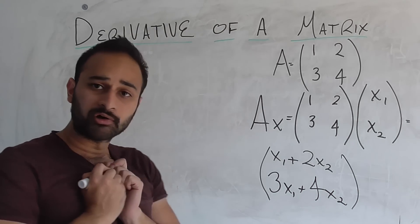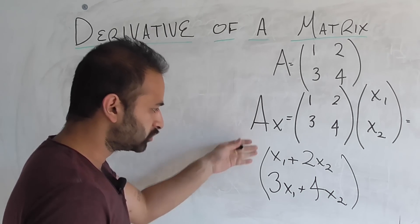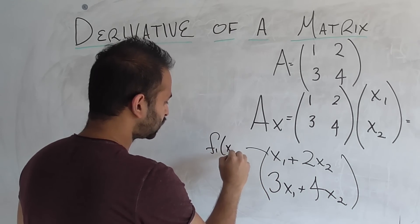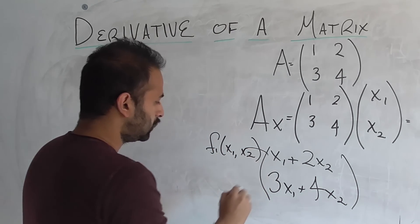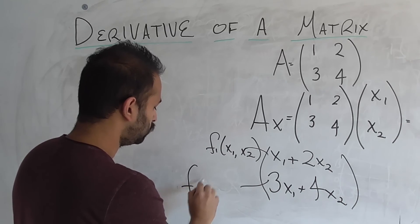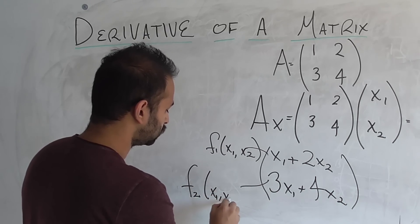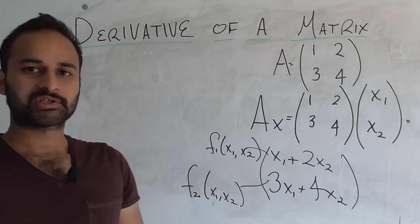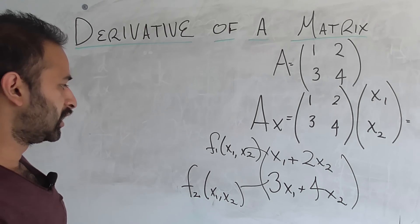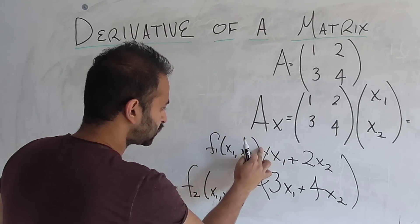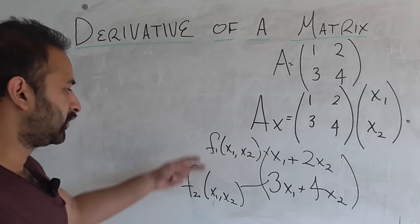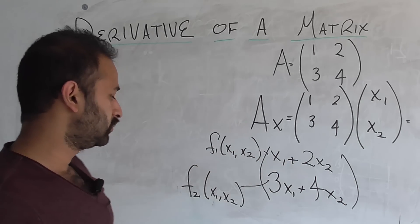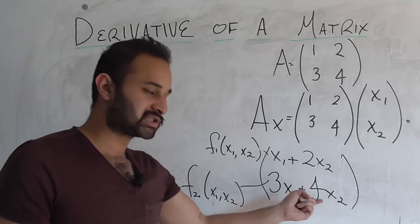Now, for terminology, let's go ahead and give names to these two functions we've created. Let's call this one f1 of x1 and x2, and let's call this one f2 of x1 and x2. So we see that that makes sense. Both are functions of two variables, x1 and x2, and they're two separate functions. So f1 is x1 plus 2x2, and f2 is 3x1 plus 4x2.